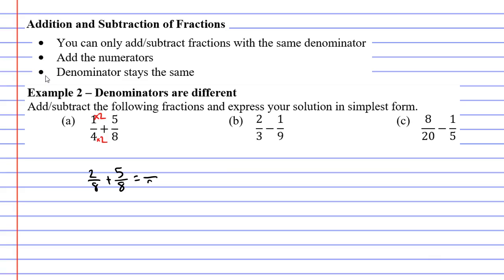Our solution will have the same denominator of eight and two plus five when we add our numerators equals seven and that's our solution for A. Seven over eight.